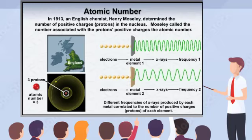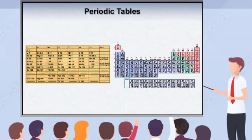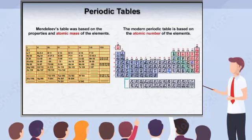Moseley called the numbers associated with the positive charges from the protons the atomic number. When elements were arranged according to their atomic number, similar periodic trends in their properties emerged as in Mendeleev's table. However, the table based on atomic number worked better because patterns didn't need to be broken as Mendeleev had done when he based his table on atomic mass. Mendeleev's table was a fortunate accident — it had worked because atomic mass increases with atomic number.